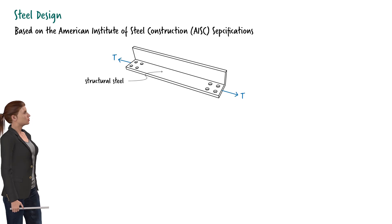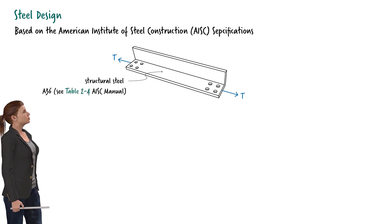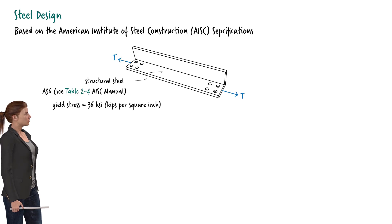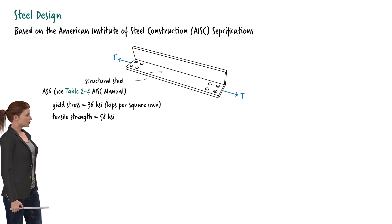Consider a standard structural steel member subjected to a tensile force. Standard structural steel comes in several grades. Suppose our tension member is made of A36 steel. This particular grade has a yield stress of 36 ksi and a tensile strength of 58 ksi. Yield stress and tensile strength are material properties determined based on experimental data, which can be visualized using the stress-strain diagram.